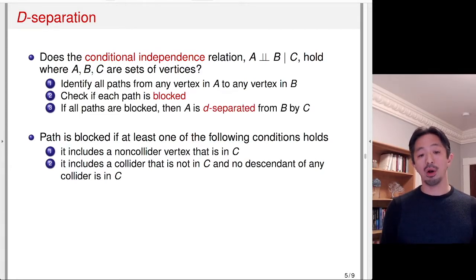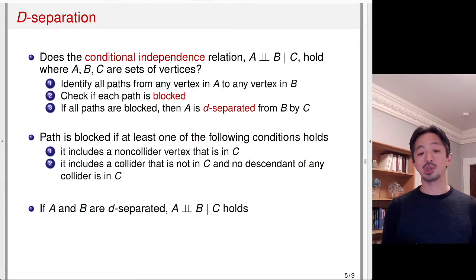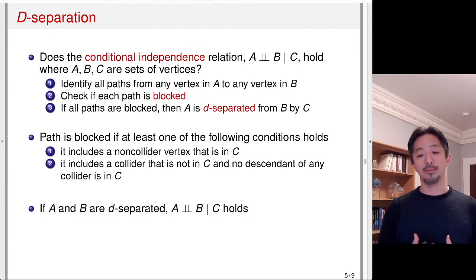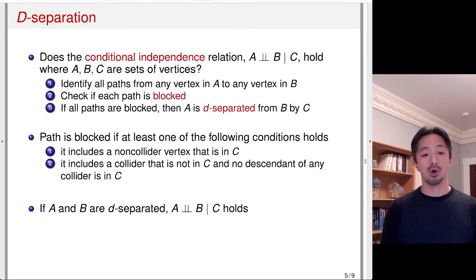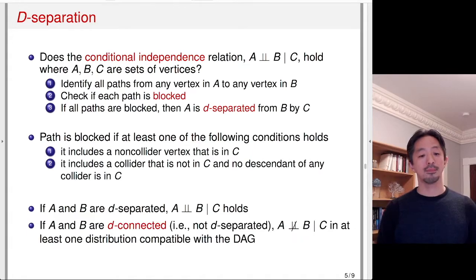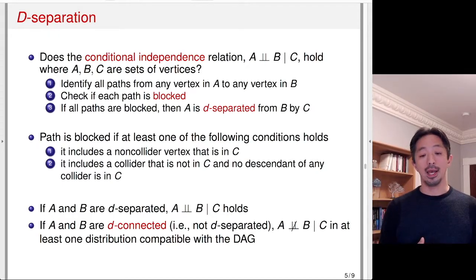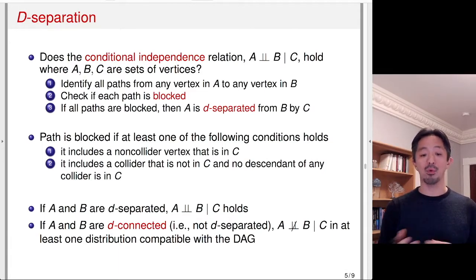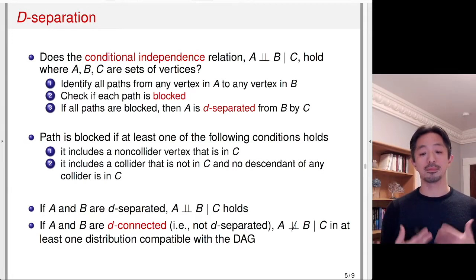Finally, if all paths are blocked, we call A D-separated from B by C. And if A and B are D-separated by C, then A is conditionally independent of B given C. At a high level, if you look at the graph and apply this rule, you can read off the conditional independence relations automatically. And if A and B are D-connected — not D-separated by C — then A and B may not be conditionally independent given C. There exists at least one distribution compatible with the DAG that makes A and B conditionally dependent given C.